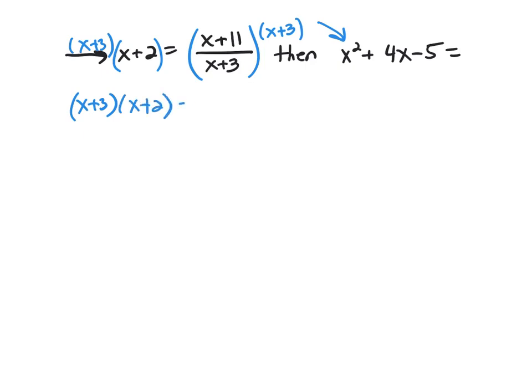If I was actually taking the test, I'd go ahead and multiply that out to save a little bit of time. Now let's FOIL that. That's x squared plus 5x plus 6 equal x plus 11.